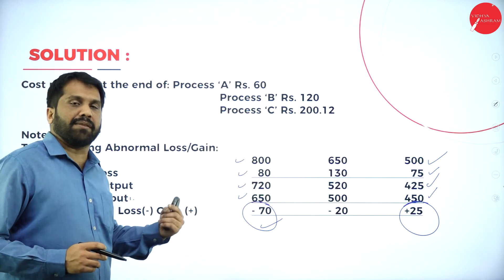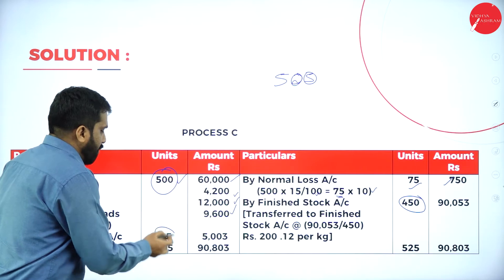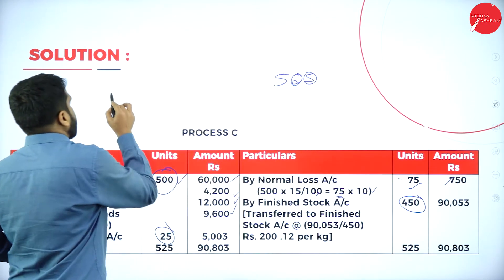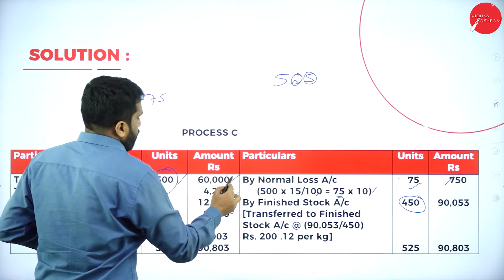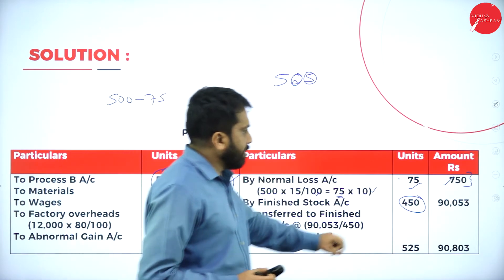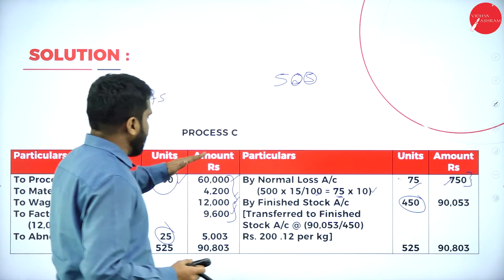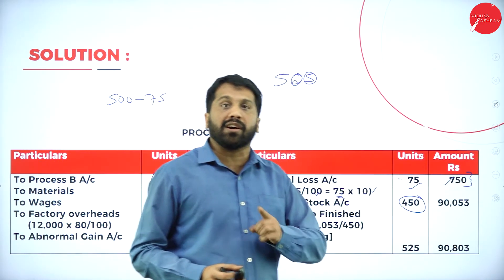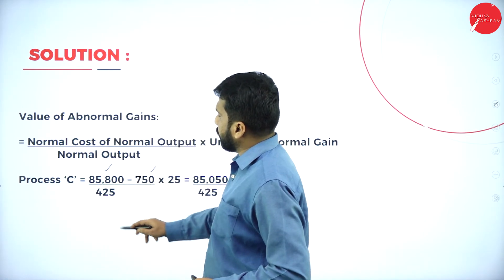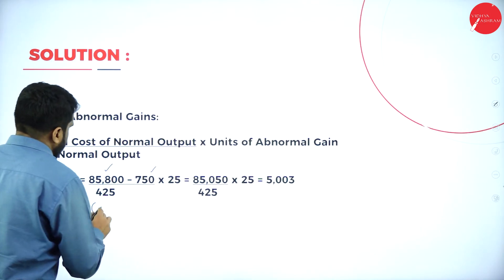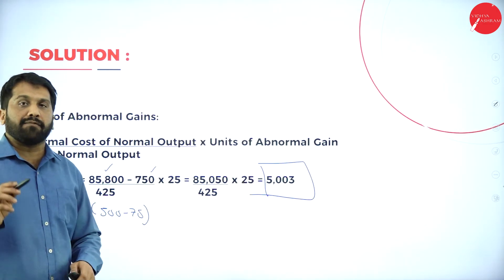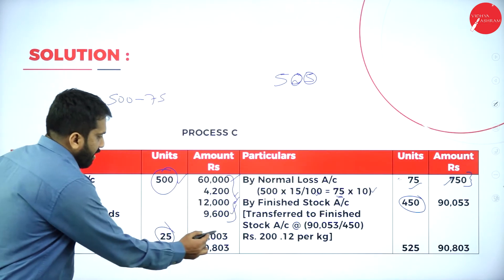Abnormal gain goes on the debit side. To find its value: formula = (total expenditure − normal loss value) ÷ (input − normal loss) × abnormal gain units = (85,800 − 750) ÷ (500 − 75) × 25 = Rs. 5,003. So abnormal gain is Rs. 5,003, placed on the debit side.